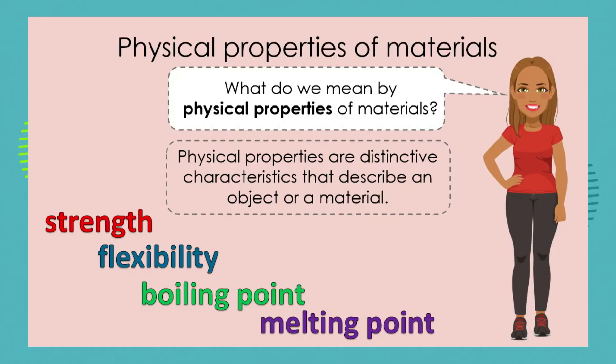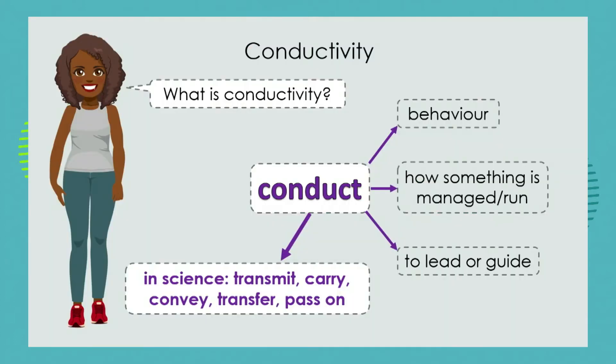So what have we looked at in the past? In previous lessons we've explored physical properties — the distinctive characteristics that describe an object or the material that an object is made out of. We've looked at strength, flexibility, boiling point and melting point, and today we're looking at conductivity, which is quite a mouthful.